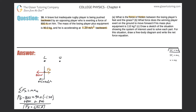That answers letter A. Now let's look at letter B: what force does the winning player exert on the ground to move forward, if his mass plus equipment is 110 kilograms? Part C is just to sketch the situation, which we're doing in each part anyway. Let's draw a free body diagram from the winner's perspective — this point represents the winner.